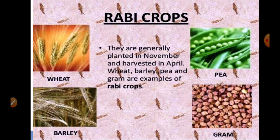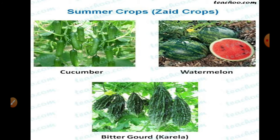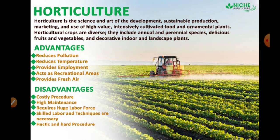Along with Kharif and Rabi crops, some Zaid crops are also there, which are called summer crops — like fruits and vegetables. There is a specialized branch of science dealing with the cultivation of fruits and vegetables on a larger scale, called horticulture.